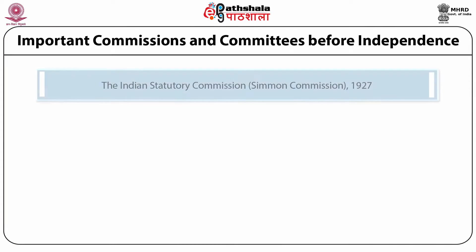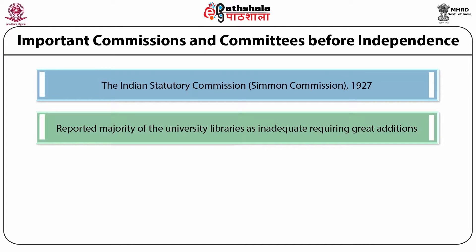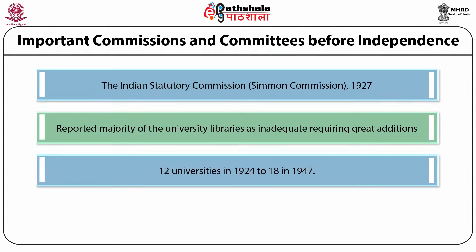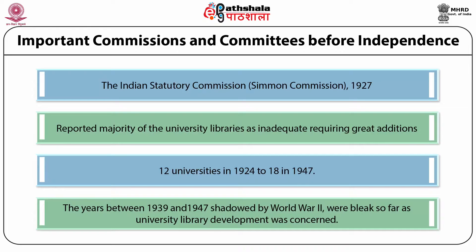The Calcutta University Commission, called the Sadler Commission of 1917, recommended strengthening of college libraries and training to students and teachers about the use of the library. It stated that the university should have the services of a librarian who should have the salary and status of a professor and be an ex-officio member of the academic council. The Indian Statutory Commission, also known as the Simon Commission of 1927, reported the majority of university libraries as inadequate, requiring great additions. There were 12 universities in 1924, growing to 18 by 1947.